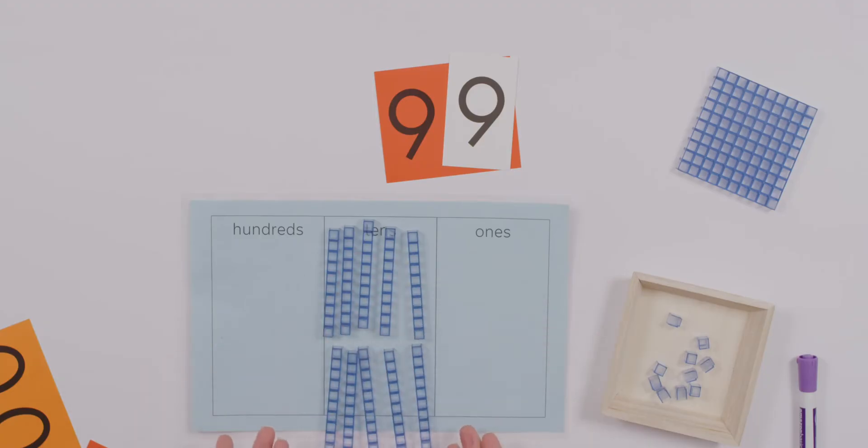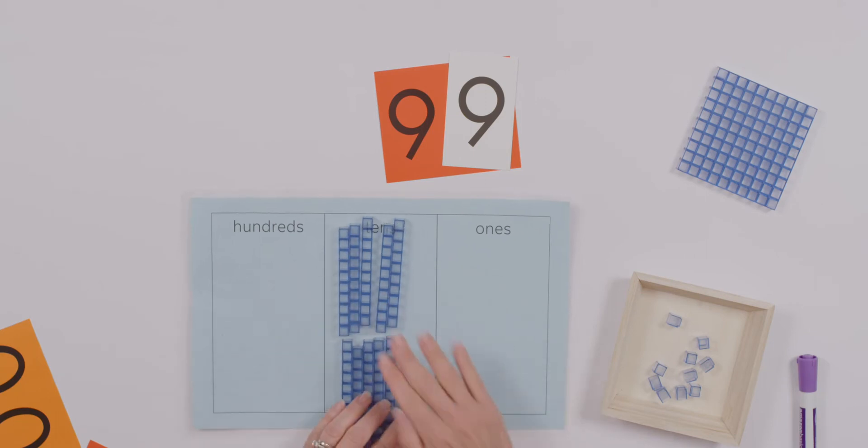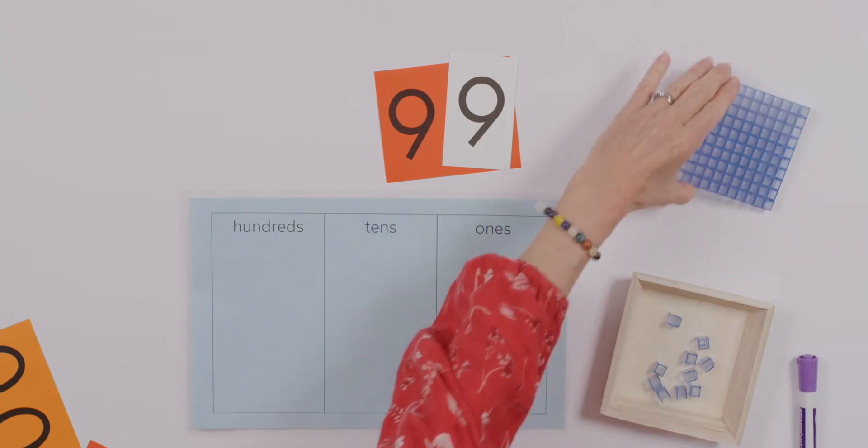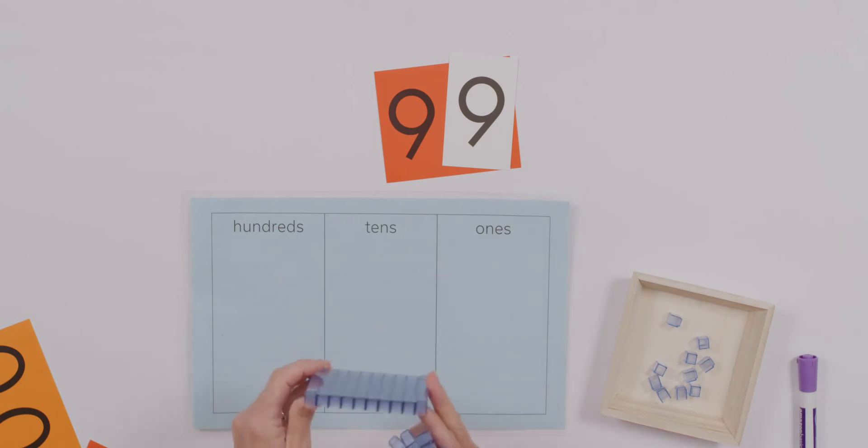Oh my goodness, the alarms are going off again. What's happening? We can't have more than nine in the tens column either, can we? So what's our solution?